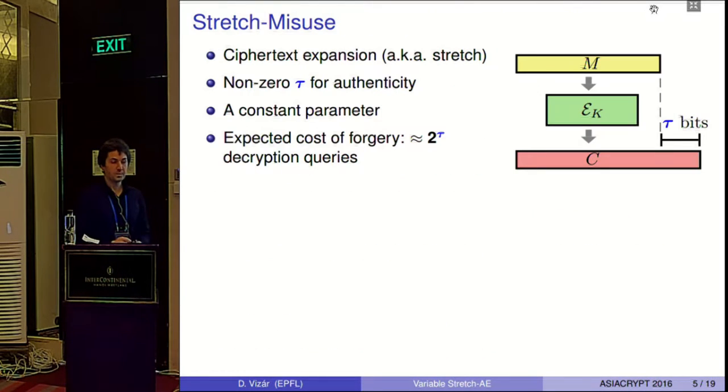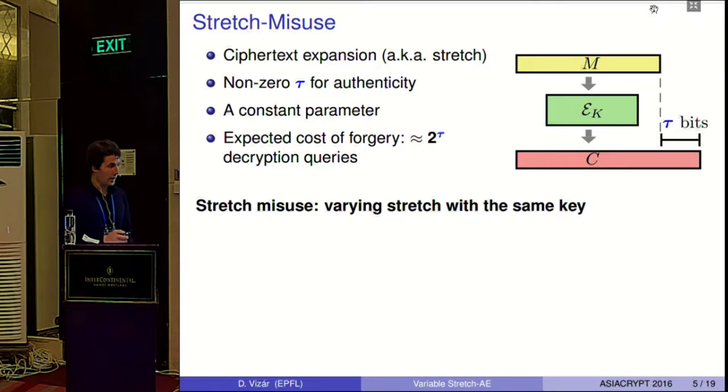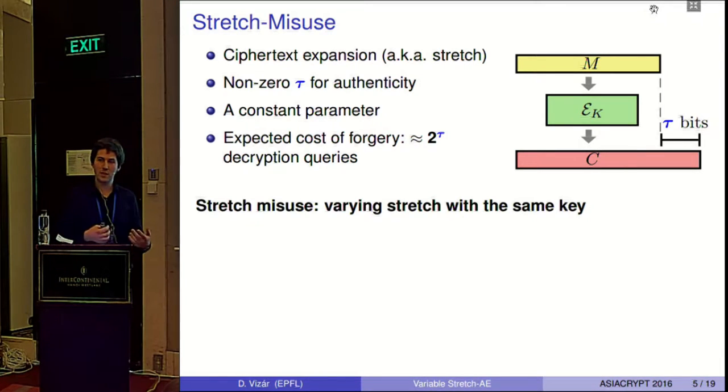The term stretch simply refers to the number of bits by which we expand the ciphertext, compared to the messages. This quantity has to be non-zero, to have meaningful guarantees for authenticity. A very basic intuition about security of AE schemes is that whenever we expand by tau bits, we expect the adversary to have to do about two to tau forgery attempts before it succeeds. For all nonce-based authenticated encryption schemes, this ciphertext expansion is considered to be a constant parameter. Stretch misuse would be simply the case where a user would use several different values of stretch with the same secret key.